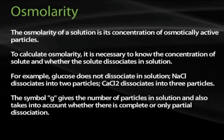For example, glucose does not dissociate in solution. Sodium chloride dissociates into two particles. Calcium chloride dissociates into three particles. The symbol G gives the number of particles in solution and also takes into account whether there is complete or only partial dissociation.